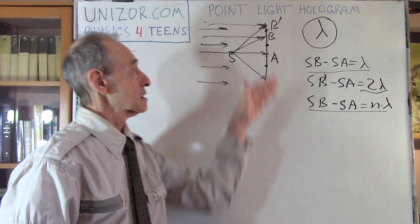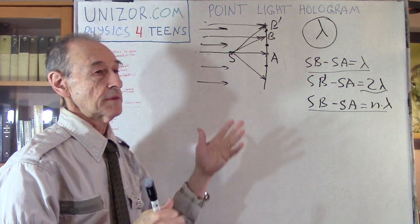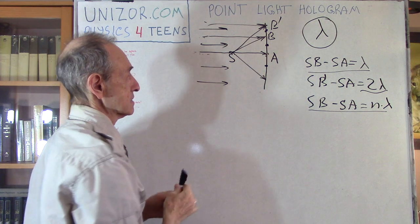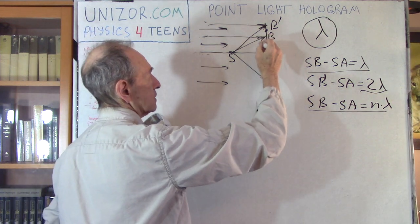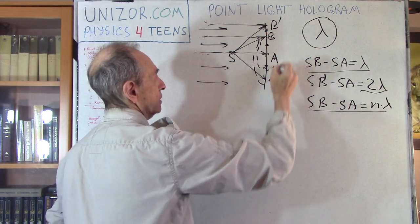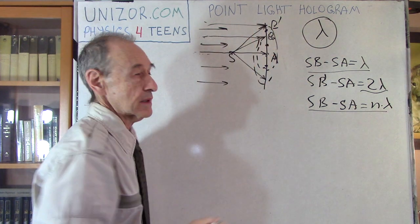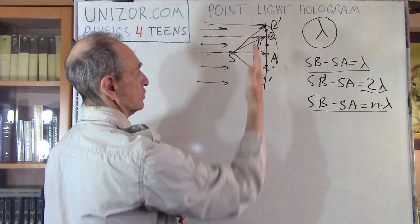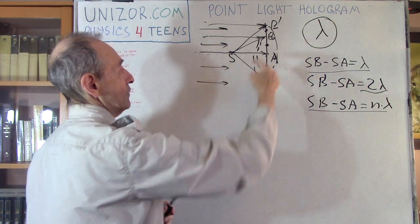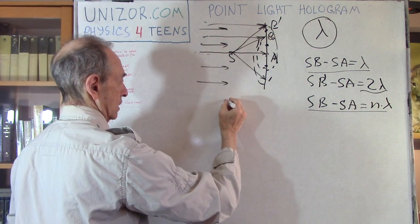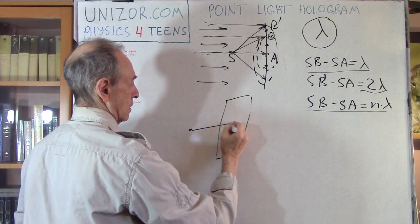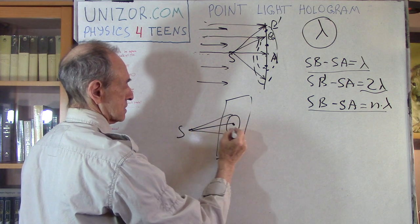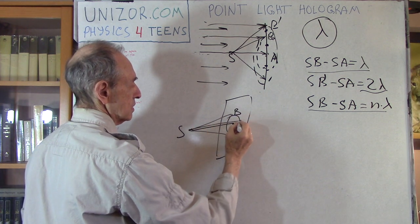So we will have bright and dark spots. If this is a flat screen in a three-dimensional world, we will actually have circles of bright spots — concentric circles around the midpoint A. That would be circles because in three dimensions, the difference SB minus SA is exactly the same wherever point B lies on a circle around A. It's like a cone: all the rays falling on a circle around point A form a cone, and the distance from the top of the cone to any point on its base is equal. So we will have bright and dark concentric circles around A.